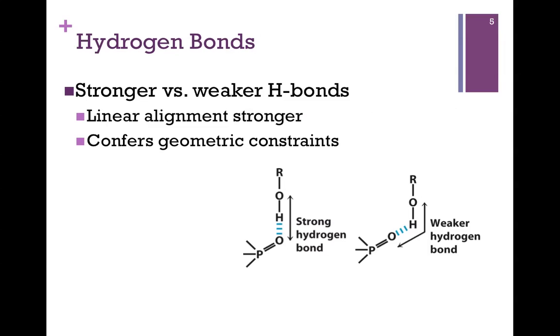In the case of the figure on the left here, we have a linear alignment of the atoms involved in the hydrogen bond. Oxygen, hydrogen, oxygen, and a linear arrangement. This allows for maximum overlap of those orbitals, and remember that means the shortest distance and the strongest bond.